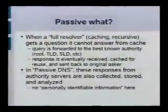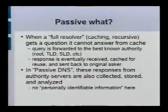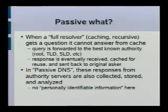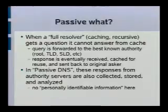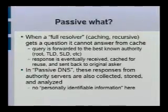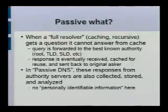If you have a recursive name server on your network and you ask it, or one of your customers asks it something it doesn't know, it will forward that query upstream and eventually get an answer back, which it will keep in its cache. It will also forward the response back to the original person. Passive DNS consists of tapping into the flow of responses coming from upstream — from authority servers like the .com servers or the Google.com servers — toward your recursive name servers, and analyzing it in some way.